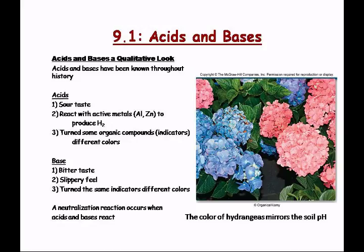Hydrangeas contain an indicator — plants grown in acidic soil produce blue flowers, and those grown in basic soil produce pink flowers, due to the same compound having more OH or more H⁺ attached to it.